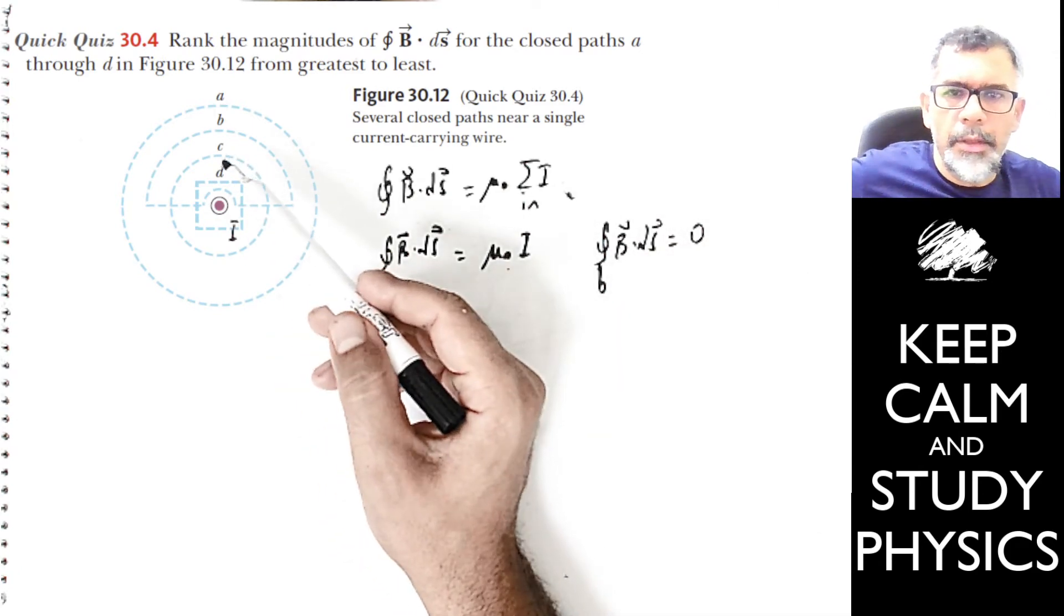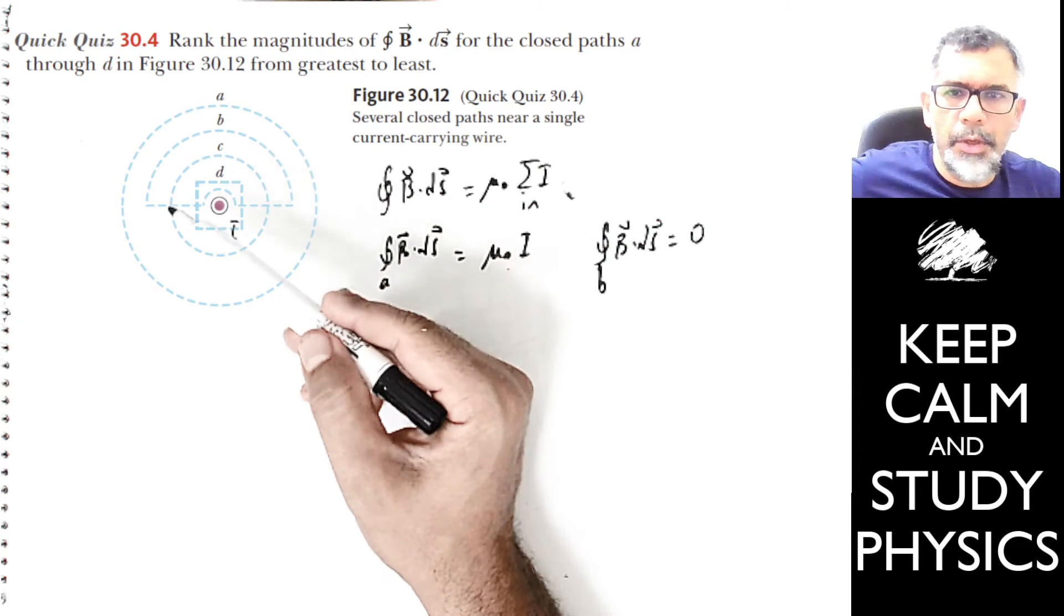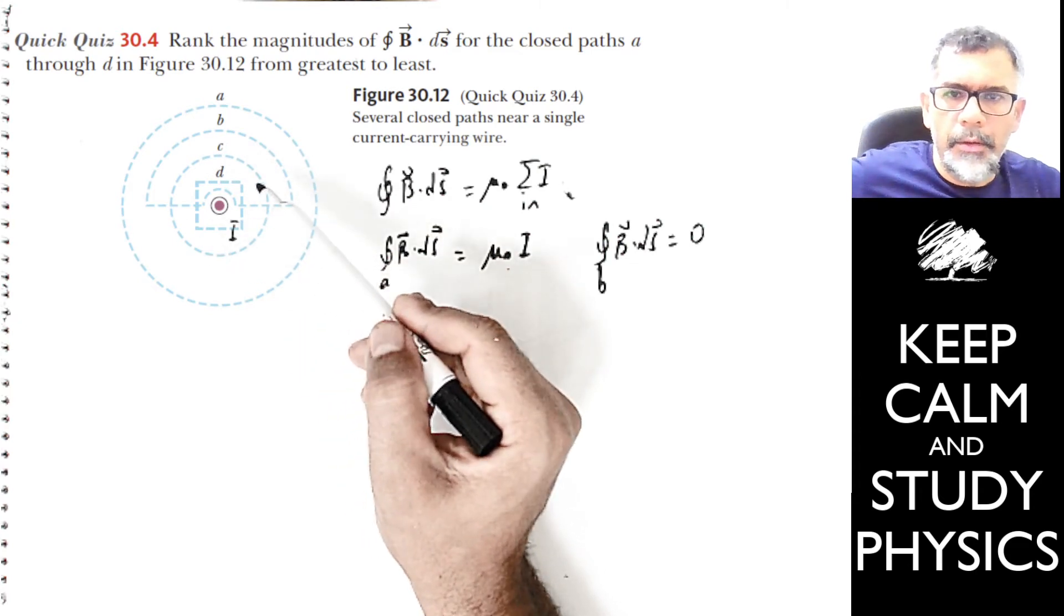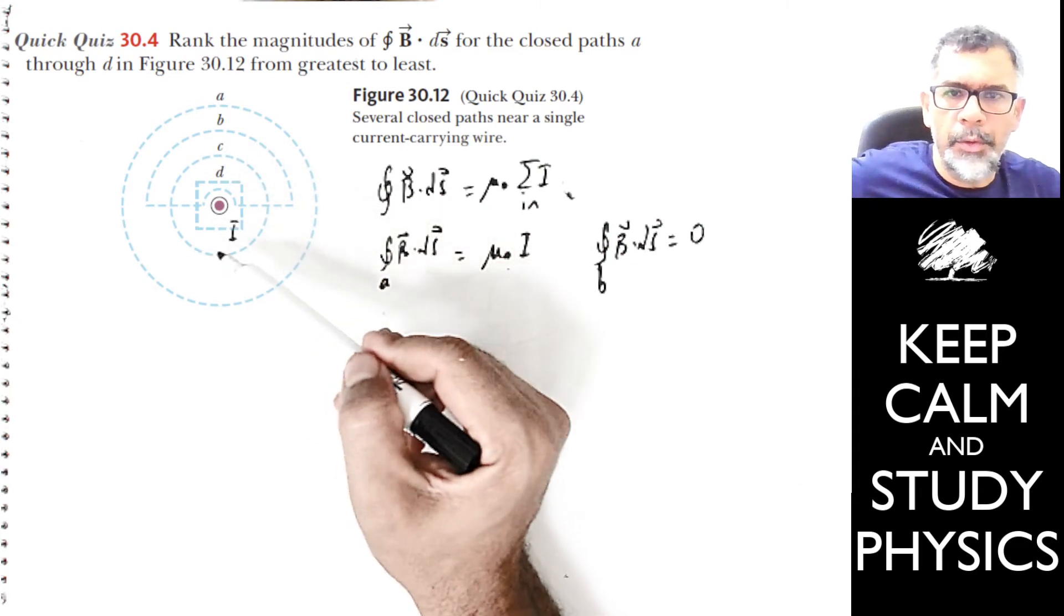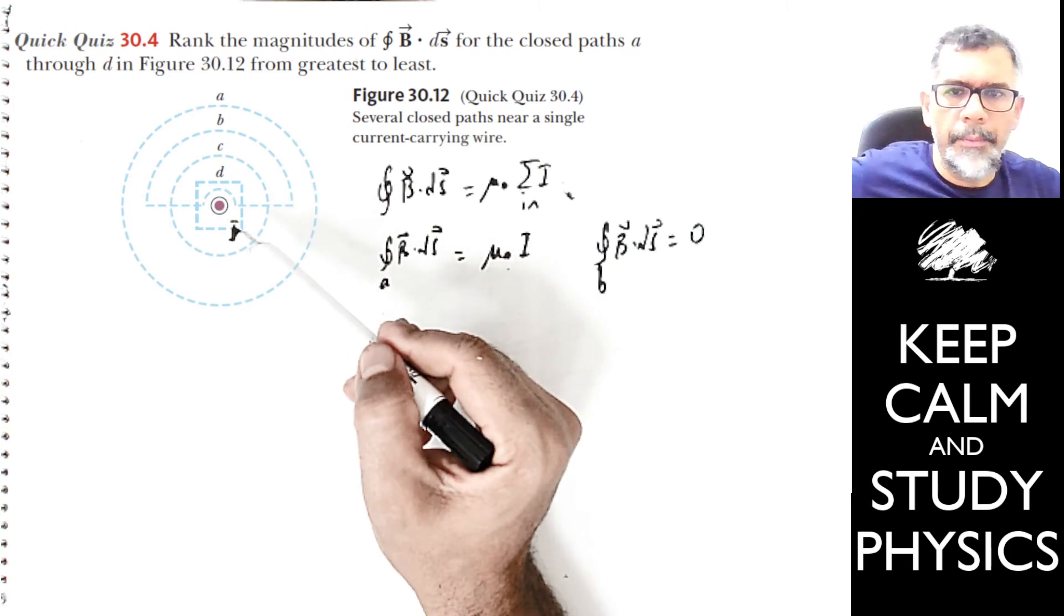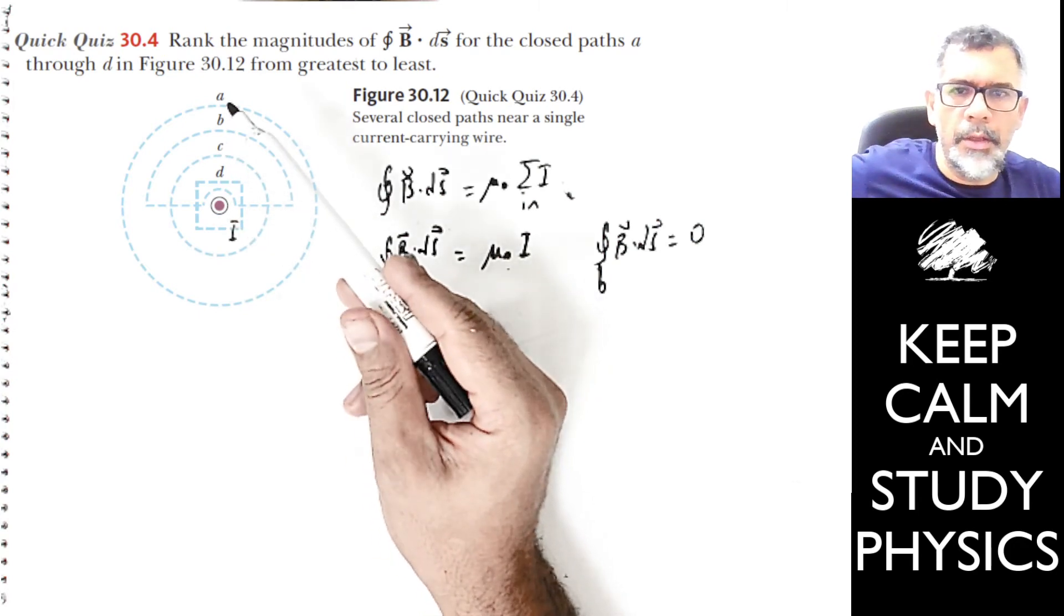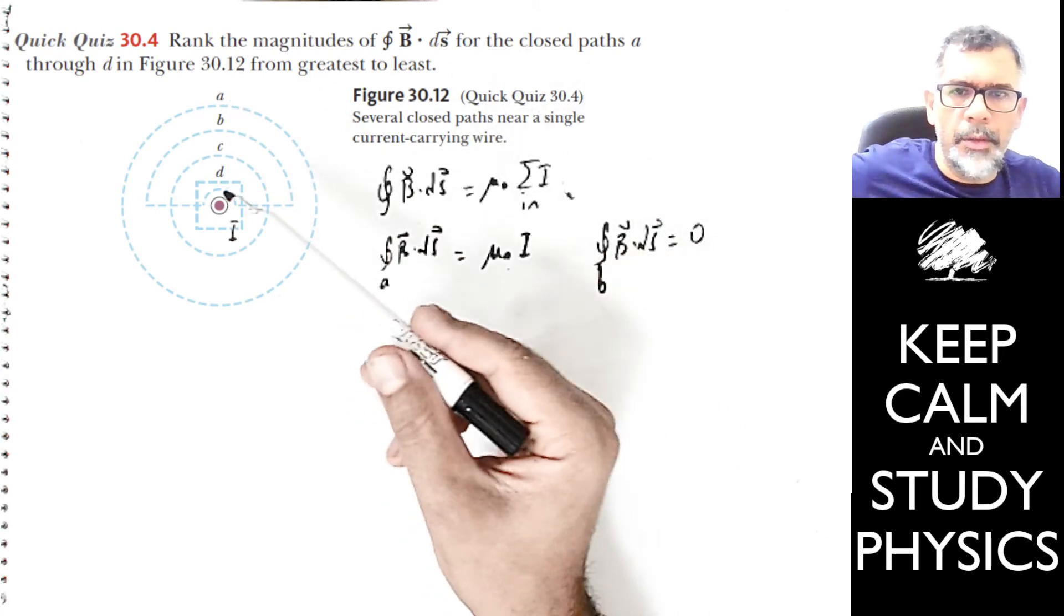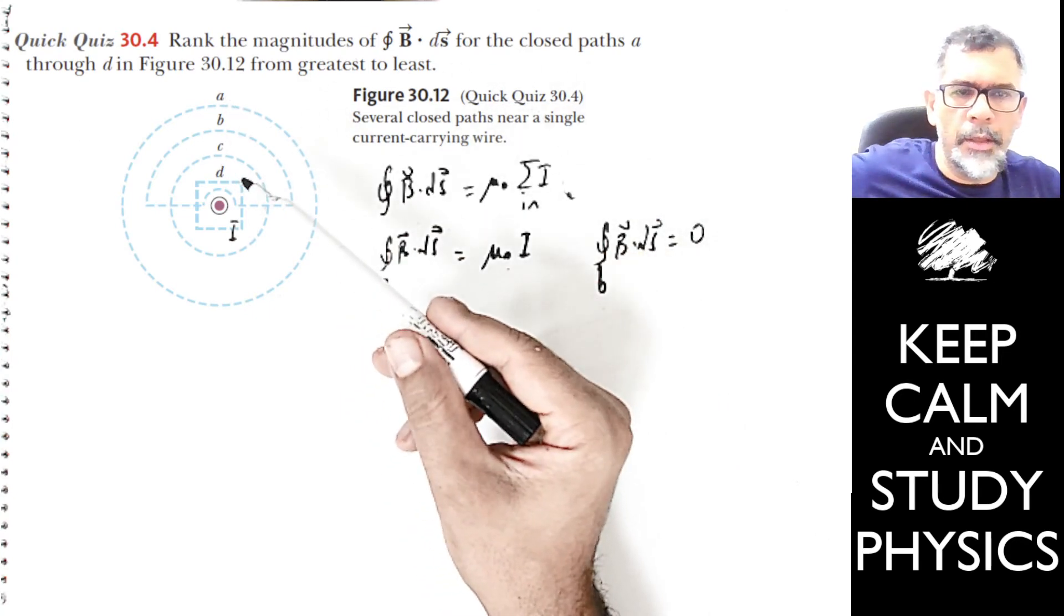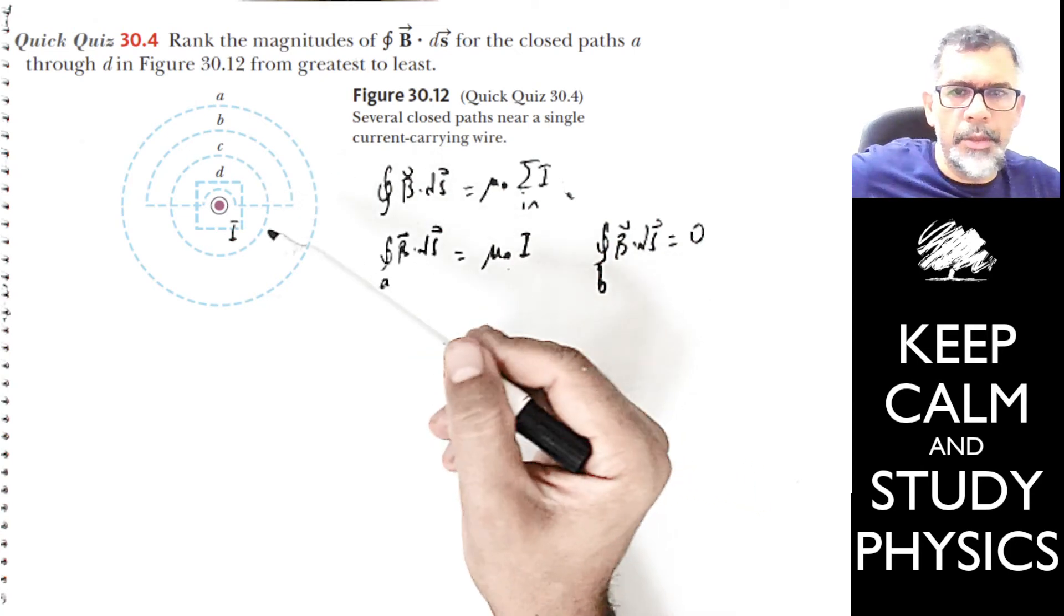Next, consider path C. C is another circle which contains the current I. This C circle is smaller than circle A, but that doesn't matter because they both contain the current and the result does not depend on the size of the circle.